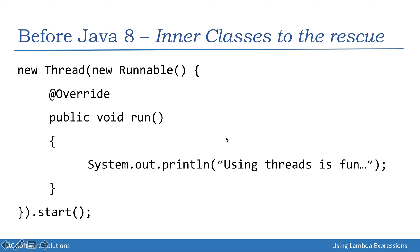Before Java 8 we also had the approach of using anonymous inner classes for doing the same job, which helped us write shorter code. Here I'm initializing a new Thread object and passing an anonymous inner class that implements the Runnable interface right at this line, with a single method run and the same println message. Then we call start on the thread. This does the same job as the previous piece of code but with fewer lines.